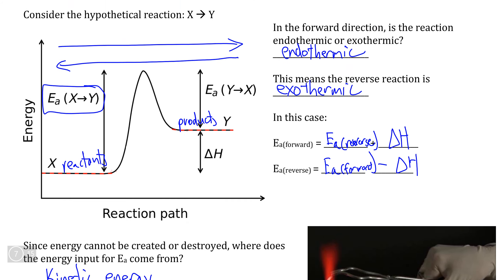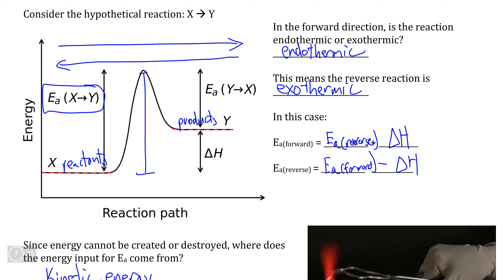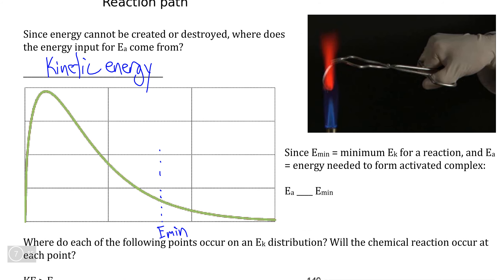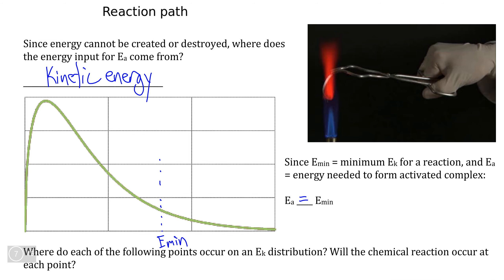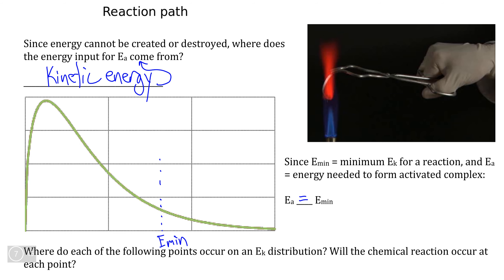E-min is the minimum amount of kinetic energy needed in order for a reaction to take place. This definition sounds very similar to EA — the minimum amount of potential energy we need to add in order to form the activated complex — because they are actually the same. The kinetic energy from E-min is the kinetic energy we need to add to the reactants to form the activated complex. Activation energy and E-min are the same number: E-min refers to that energy in its kinetic form, and when converted, it becomes the potential energy needed to make the new bonds in the activated complex.